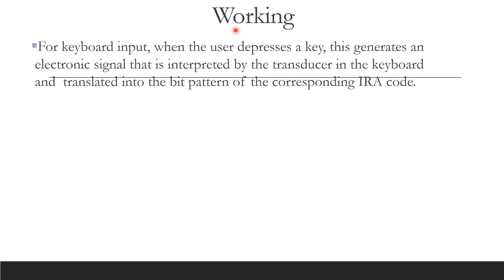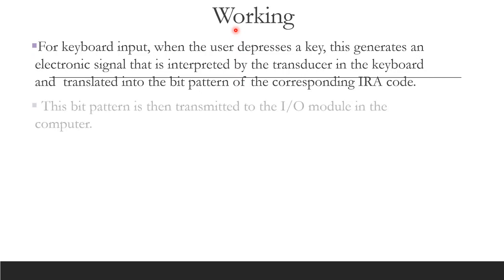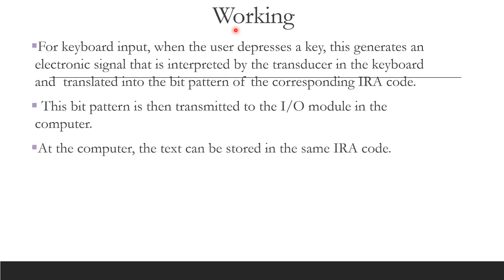When a key is pressed, an electronic signal is generated — this is the transducer function. The signal is interpreted and translated into the corresponding ASCII 7-bit pattern. This bit pattern is transmitted to the IO module in the computer. At the computer, the text is stored in the same ASCII code.